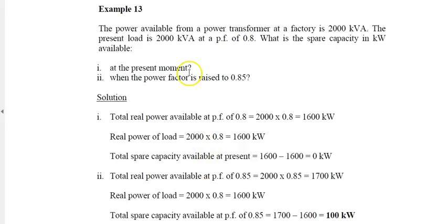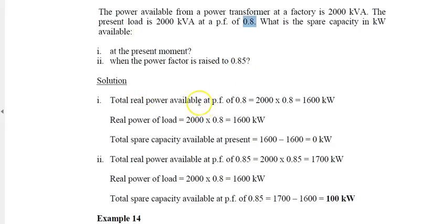Another example: The power required from a power transformer at a factory is 2000 kVA. The present load is 2000 kVA with power factor 0.8. What is the spare capacity in kilowatt available at the present moment when the power factor is raised to 0.85? The total real power available at power factor 0.8 is 2000 times 0.8, which is 1600 kW. The real power used is also 1600 kW, so there is no spare capacity.